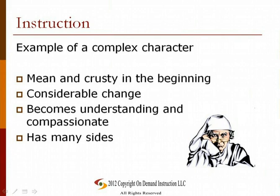Ebenezer Scrooge from Charles Dickens' A Christmas Carol is a complex character. He is mean and crusty in the beginning of the story, but by the end he has changed considerably and become more understanding and compassionate. He also has many sides to him. In his schoolboy years, he was abandoned by his father at a boarding school, even during Christmas, planting the first seed of his hatred for the holiday.